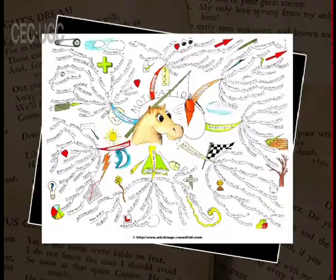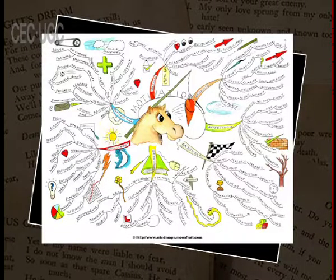The motivated behavior moves in a specific direction. The behavior of the organism is purposeful and persistent. Under motivated conditions, the behavior of the organism does not move in an absurd way. It is directed toward a selective goal which the individual sets for himself.